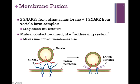As you can see, these SNAREs may contain a different number of polypeptide chains. You can think of this as an addressing system — it's to make sure that we're fusing the correct membranes. If we fuse the wrong membranes, then instead of processing a protein, we might degrade it. So this addressing system is very important.